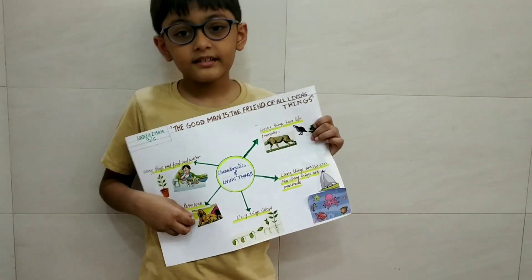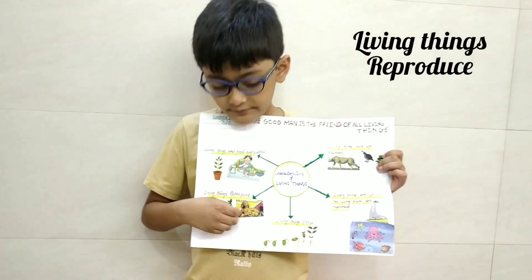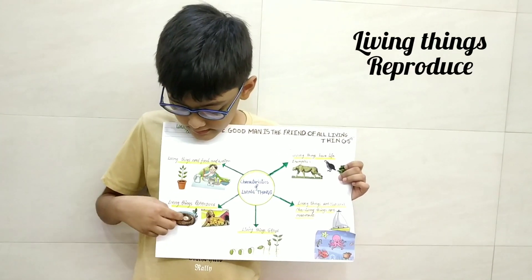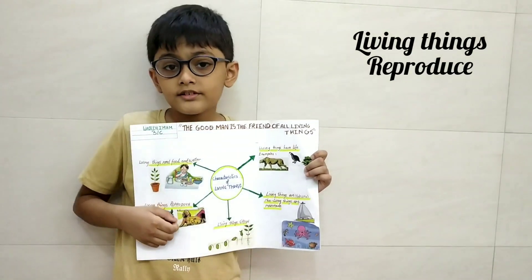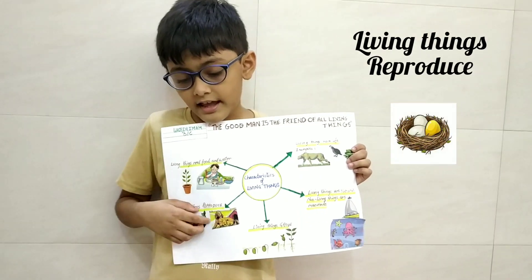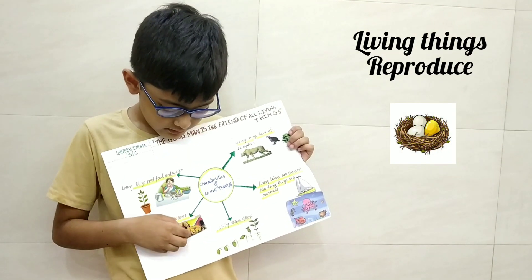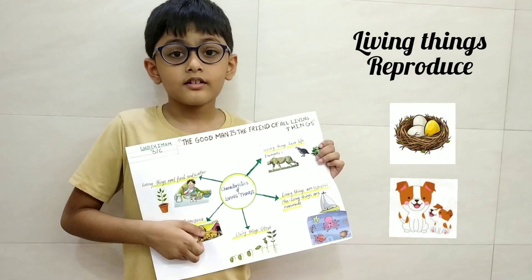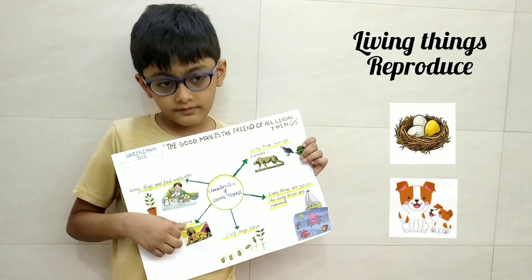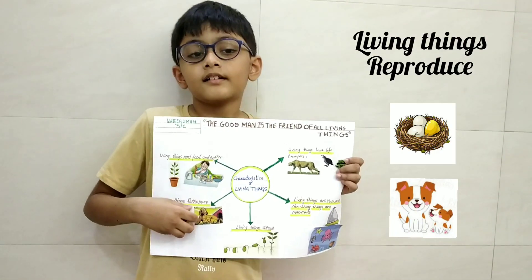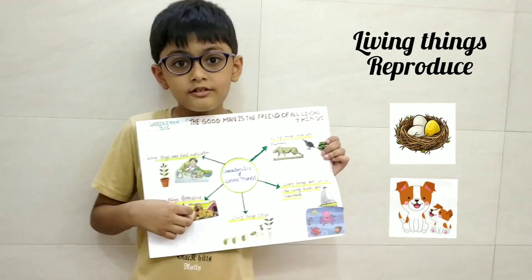Living things reproduce as well. Such as hens reproduce with eggs, and dogs also reproduce. Plants also reproduce as well. All living things reproduce.